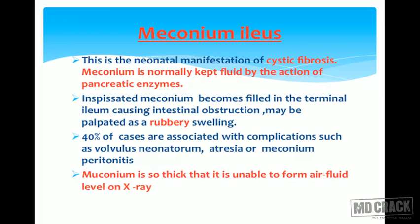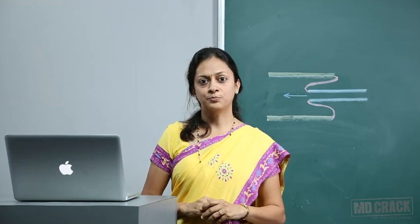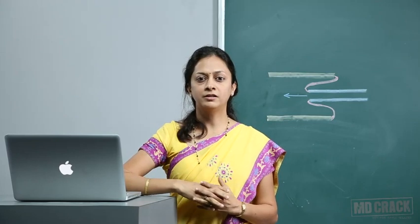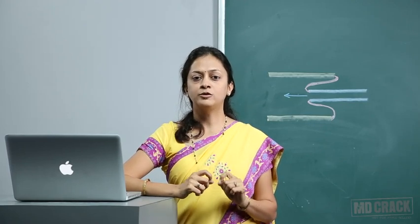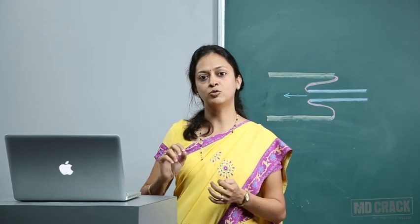Meconium ileus is the neonatal manifestation of cystic fibrosis. Meconium is normally kept fluid by the action of pancreatic enzymes. Inspissated meconium becomes filled in the terminal ileum causing intestinal obstruction, and may be palpated as a rubbery swelling. 40% of cases are associated with complications such as volvulus neonatorum, atresia, or meconium peritonitis. X-ray findings show no gas-fluid levels because the meconium is very thick.